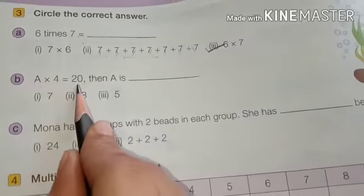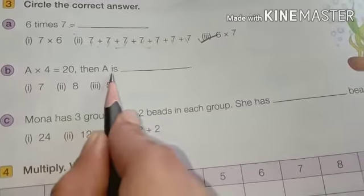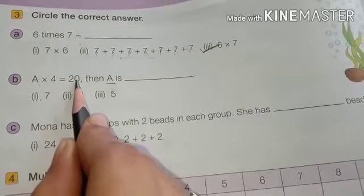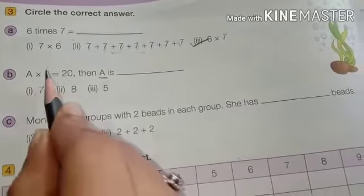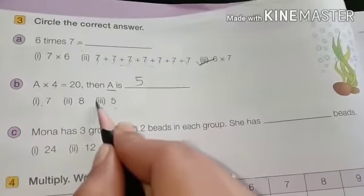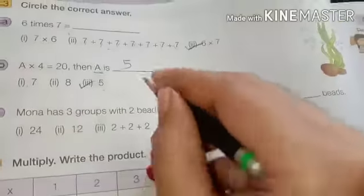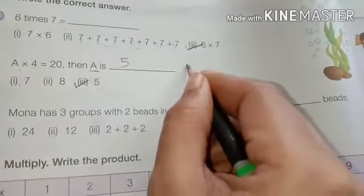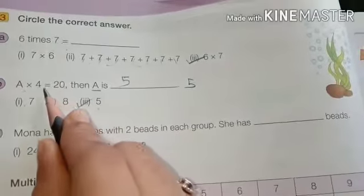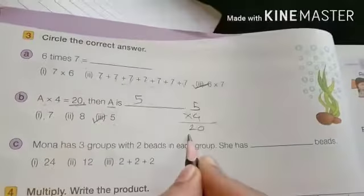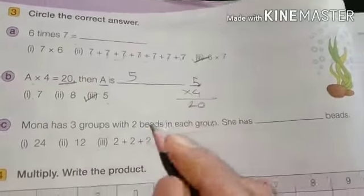A multiply with 4 is equal to 20. Now we have to find out the value of A. 4 7's are? 20 is there? No. 4 8's are? No. But 4 5's are 20. Means answer is what? 5. A's value is 5 we can put. How? Look at here. A means our 5. 5, 4, and 4 multiplication. Now answer is 20. Like this, means value of A is 5.